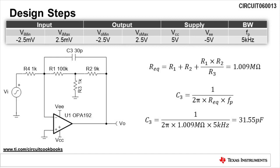Next, we need to calculate the capacitor C3 to set the cutoff frequency Fp. For this calculation, we will use the equivalent resistance of the feedback resistors, Req. Req is equal to R1 plus R2 plus R1 times R2 divided by R3. Plugging in the resistor values to the equation, we see that Req is equal to 1.009 mega ohms.